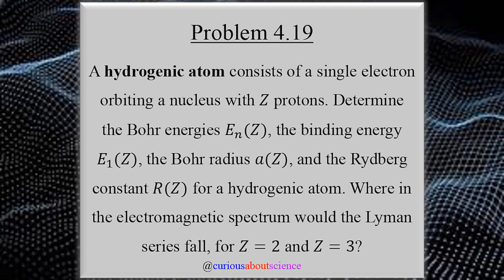So let's see what we're tasked with doing. As defined, a hydrogenic atom consists of a single electron orbiting a nucleus with Z protons. And we want to determine the Bohr energy, the binding energy, the Bohr radius, and the Rydberg constant for a hydrogenic atom. Where in the electromagnetic spectrum would the Lyman series fall for Z equals 2 and Z equals 3? Now, take for a second what do you think Z equals 2 and Z equals 3 represent, based on this definition.